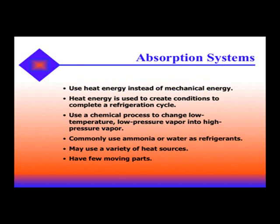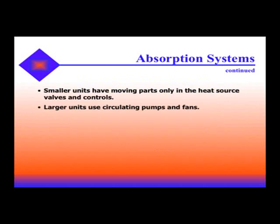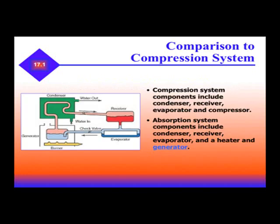Absorption systems commonly use ammonia and water as refrigerants. They may use a variety of heat sources, and they have very few moving parts. Smaller units have moving parts only in the heat source — for example, the valves and controls on a gas valve. Large units sometimes use circulating pumps and fans as well.